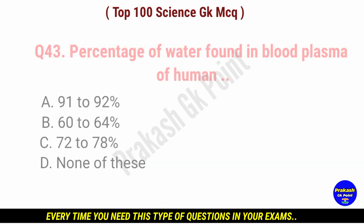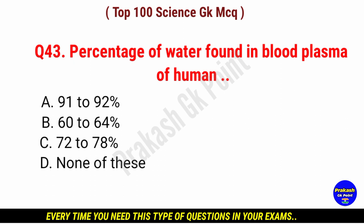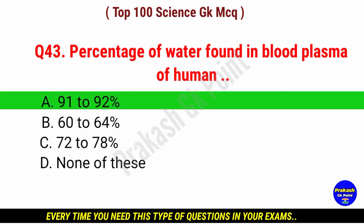Percentage of water found in blood plasma of human. Answer: option A, 91 to 92 percent.